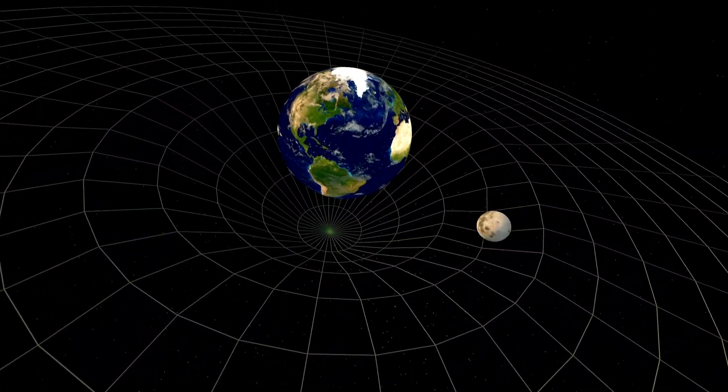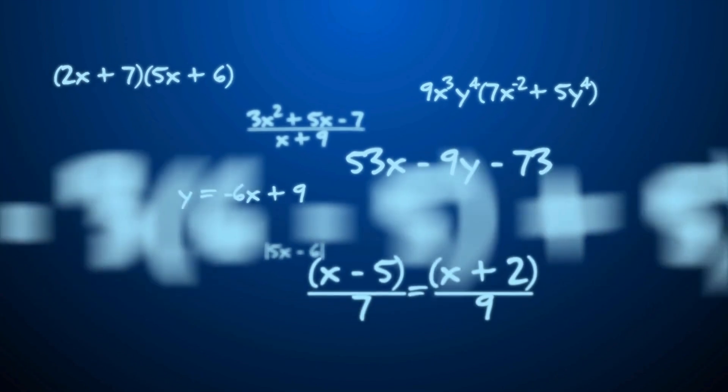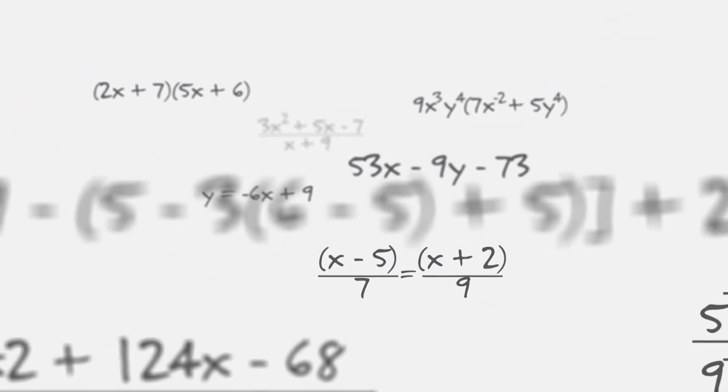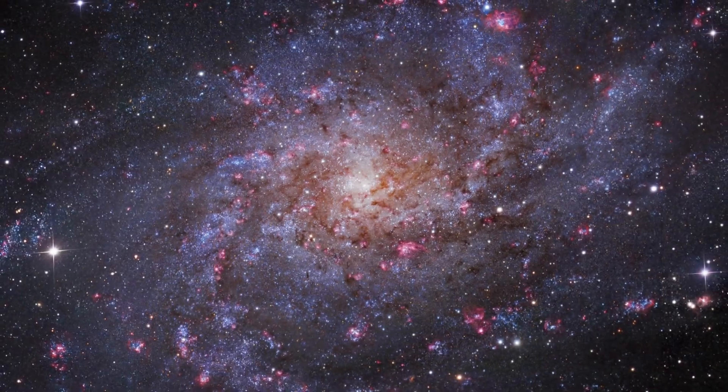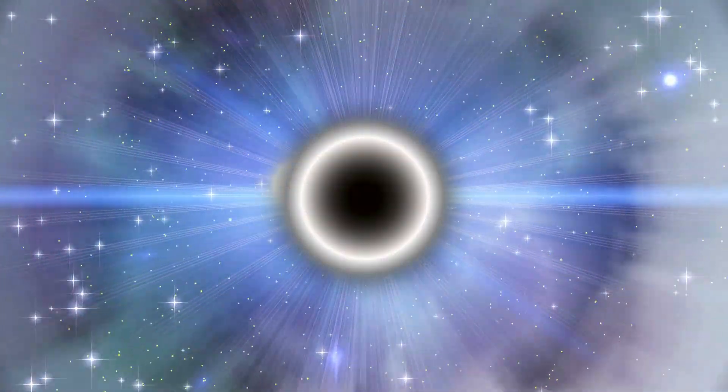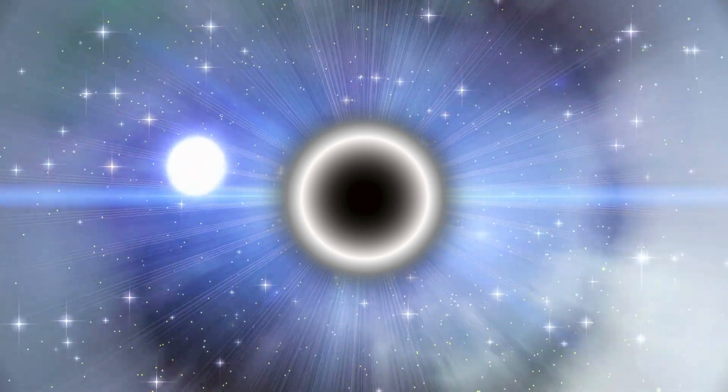Now, what is string theory? From a distance, an electron looks like a dot. The neutrino is another dot. The quark is another dot. We have all these dot particles. How many dot particles? Hundreds of them.